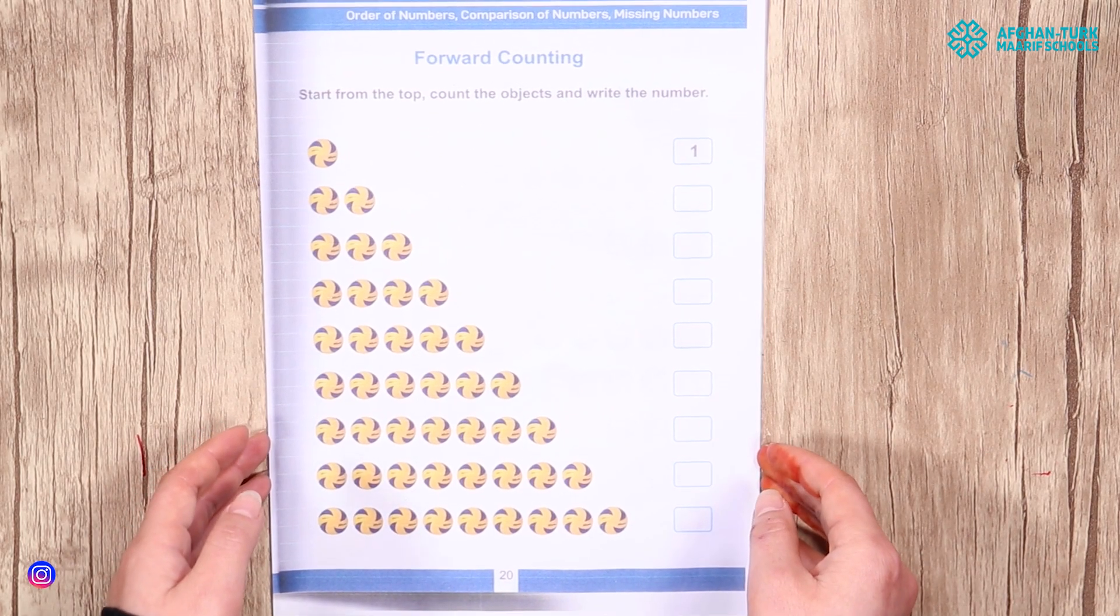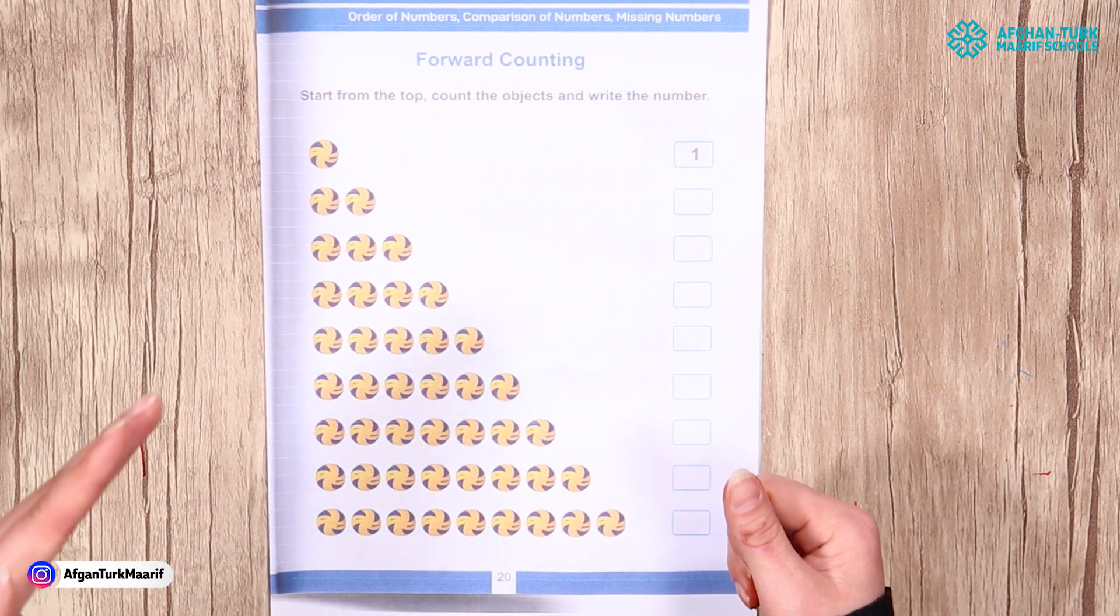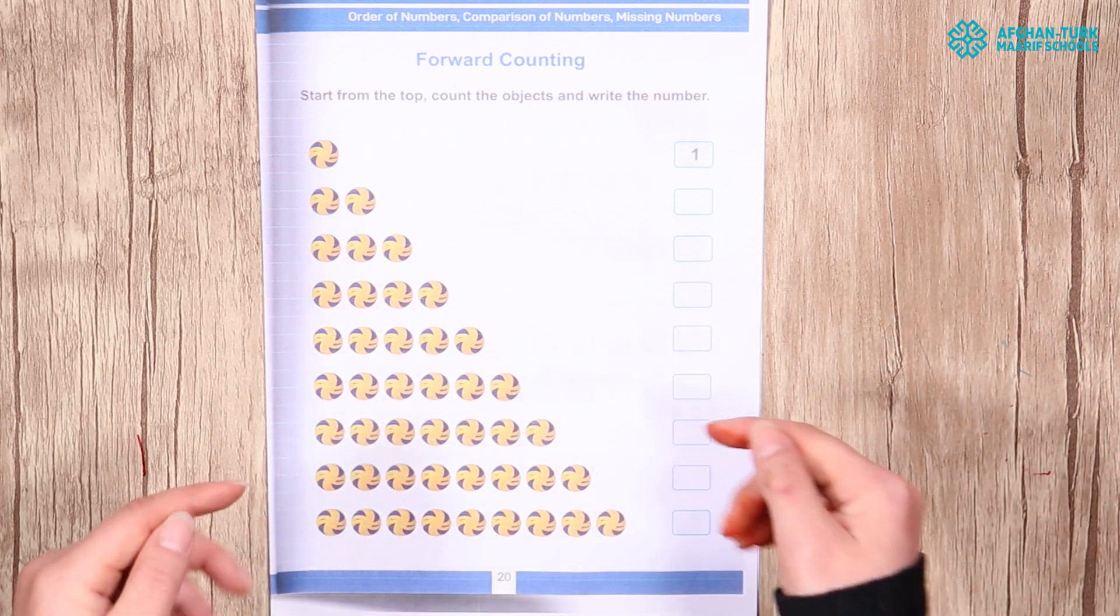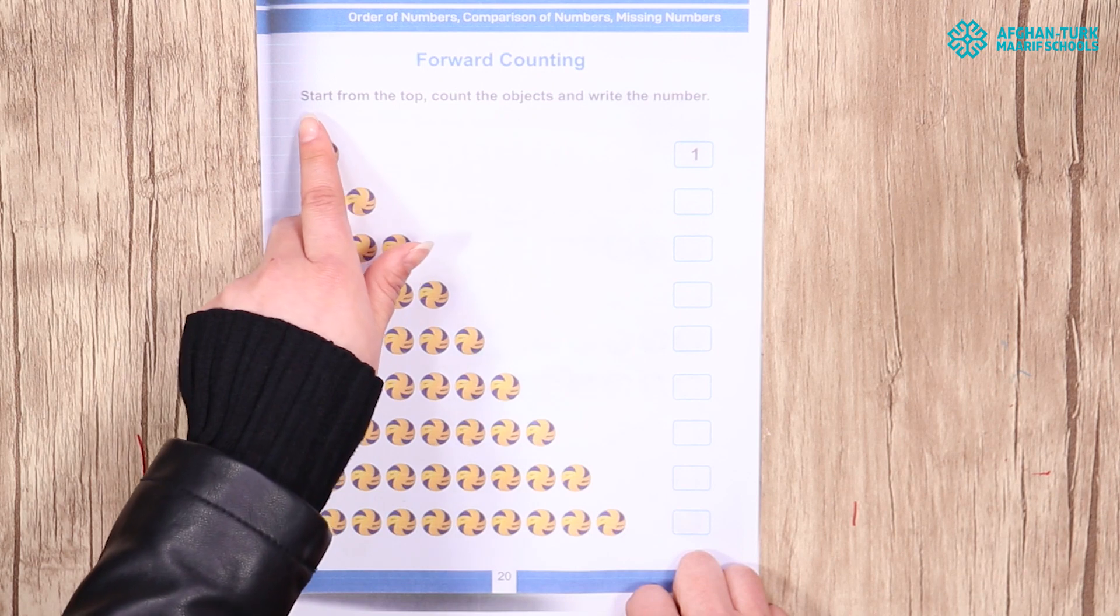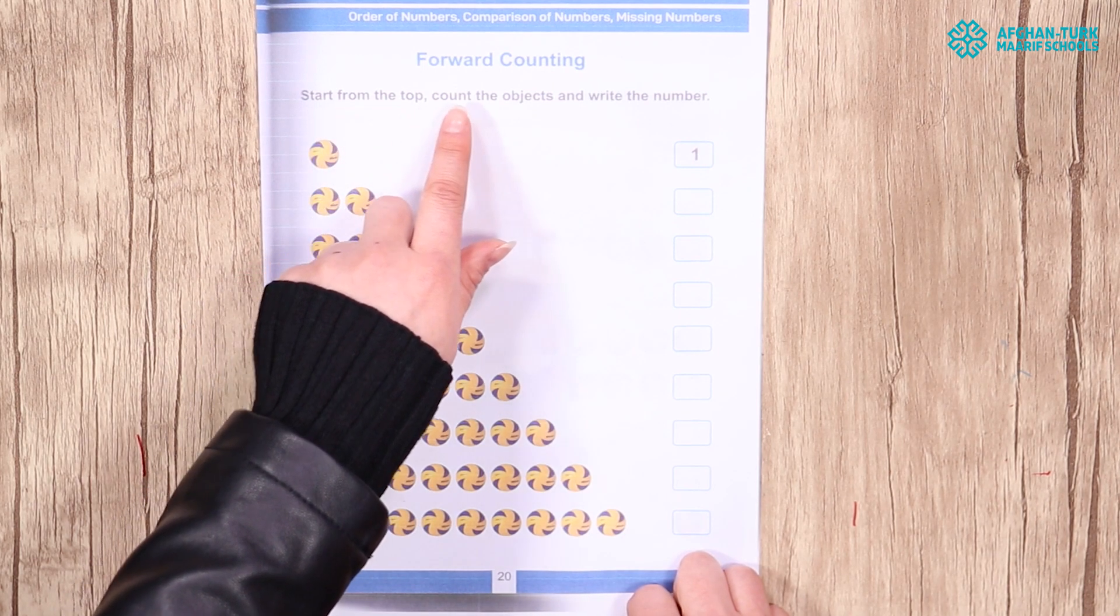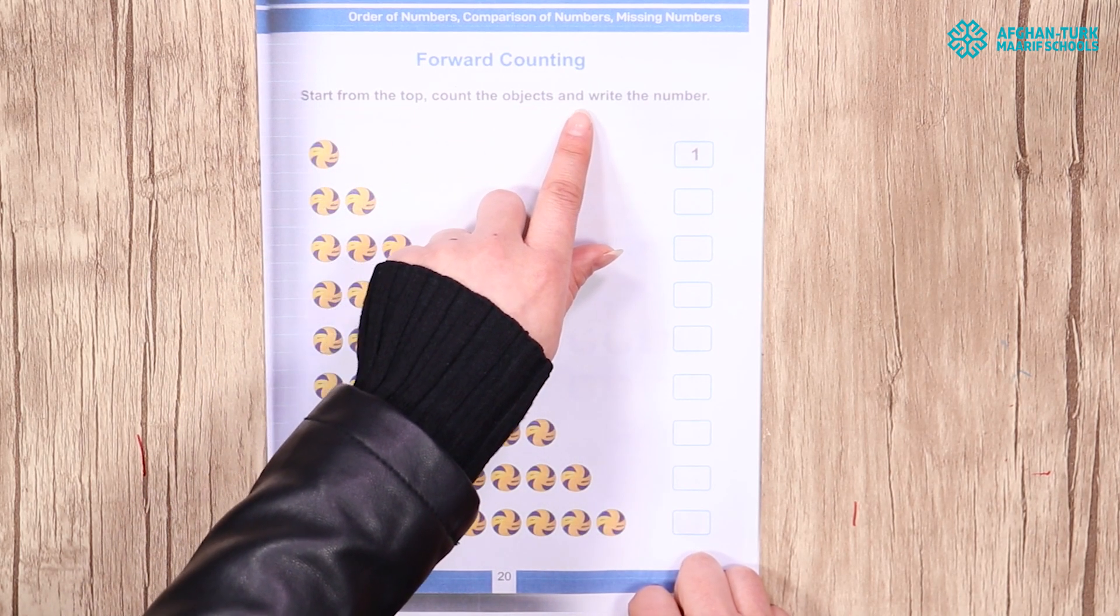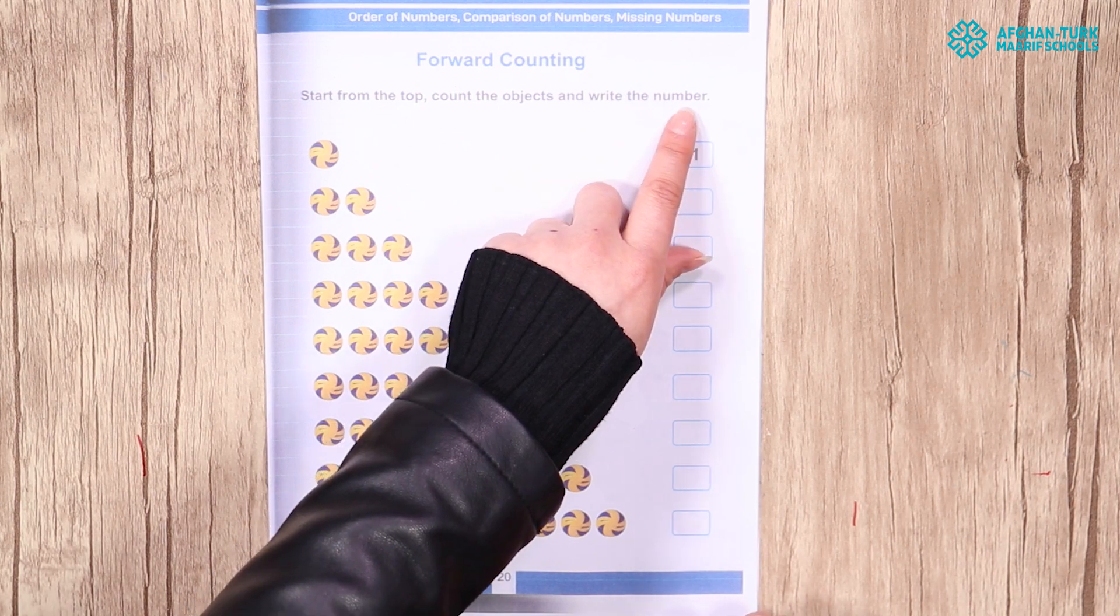So students, as you know that Ali went forward and backward. In page 20, you know that forward counting starts from the top. Count the objects and write the numbers.